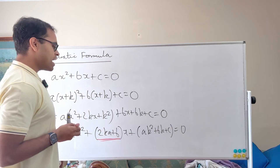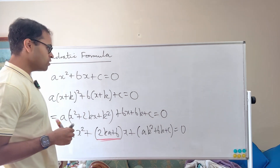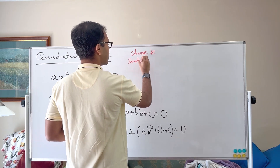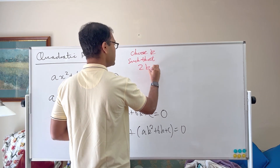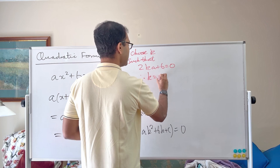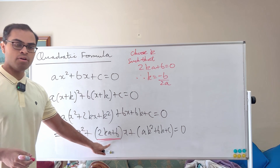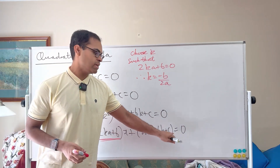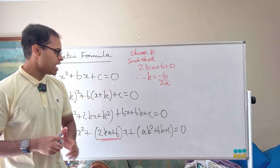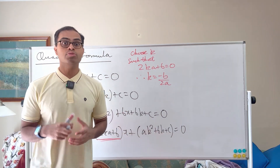There are things called depressed cubics, and this is actually a method for solving cubic equations too. But here we choose k so that 2ka + b = 0. So choose k such that 2ka + b = 0, which gives k = -b / 2a. So if k is -b/2a, then the x coefficient is 0, and we're left with ax² + ak² + bk + c = 0. Since k is now a constant, we basically have something times x² equal to a negative constant, which we can solve.